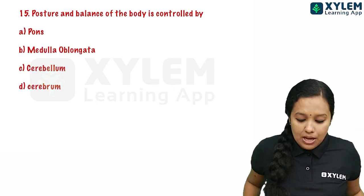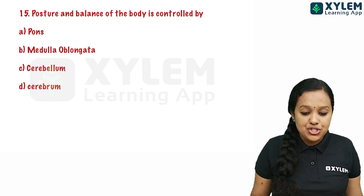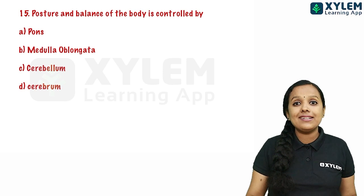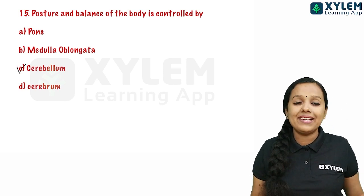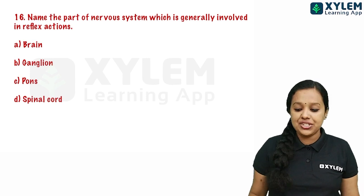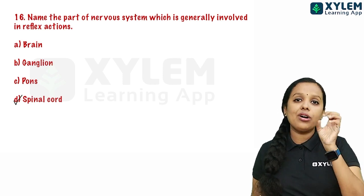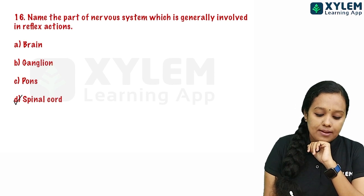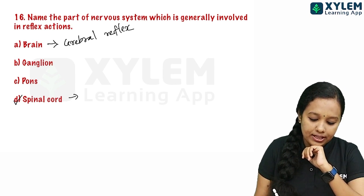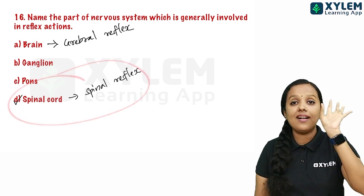The fifteenth question: posture and balance of the body is controlled by the cerebellum. The sixteenth question: the part of the nervous system generally involved in reflex action — the options are brain, ganglion, pons, and spinal cord. The correct answer is spinal cord.